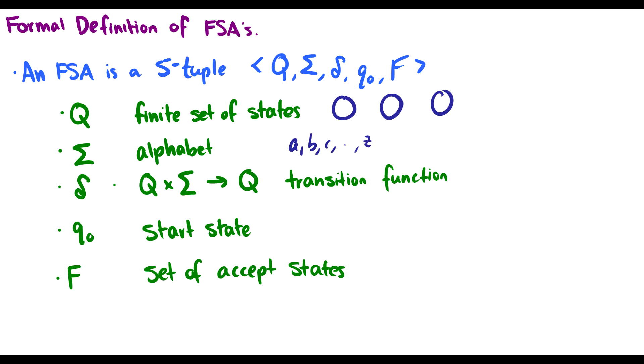We have delta, which is a function that takes a state and a symbol and maps it to another state. So essentially what this means is if we have Q1 and we have the symbol B, it'll take us to the state Q2. So this notation just means a state and a symbol gets taken to another state.